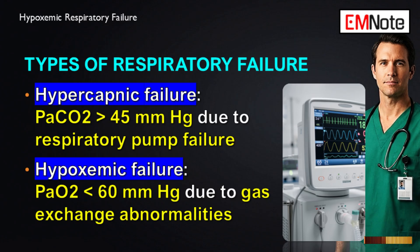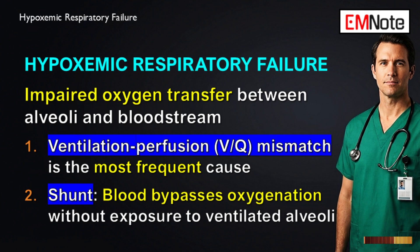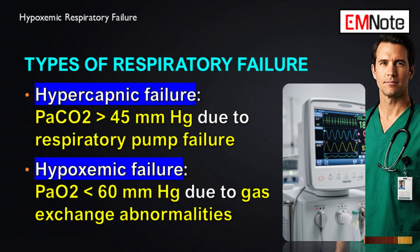What makes type 1 failure distinct from type 2? What's the core physiological problem? The core problem is a severely impaired transfer of oxygen between the alveoli and the bloodstream. This happens while carbon dioxide levels are either normal or, in many cases, actually low. So it's a failure of oxygen loading — not a failure to get rid of CO2. That distinction guides your whole treatment strategy. Unlike type 2, where high CO2 is the issue, here it's all about that gas exchange barrier.